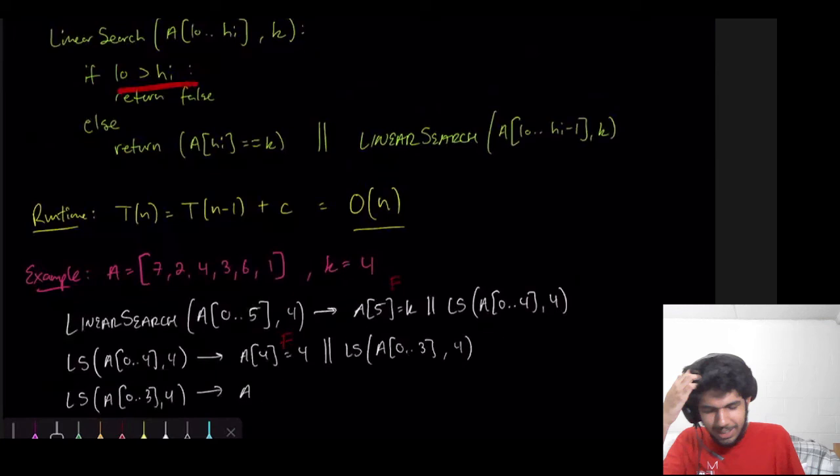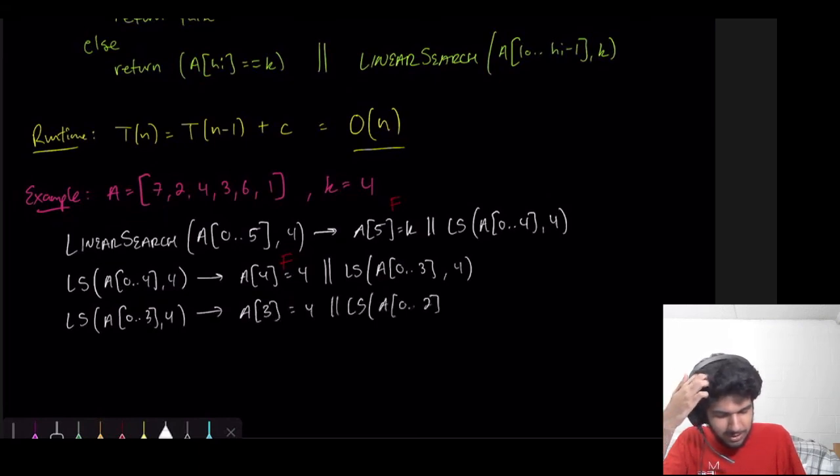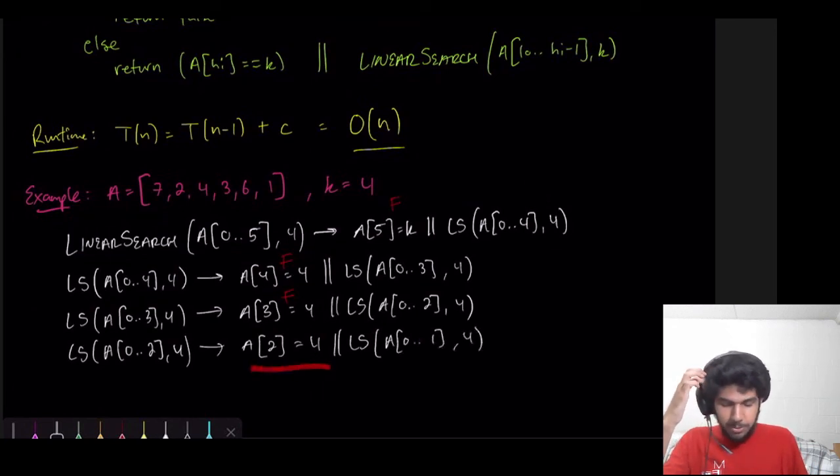So, we don't return false. So, we return the other thing here or linear search. A of 0 to 2, comma 4. We can check, is A of 3 equal to 4? This is A of 3. It's not equal to 4. So, that's a false. And then we do it again. A from 0 to 2, comma 4. Is low greater than high? No, it's not. So, we check, is A of 2 equal to 4 or linear search on the rest? So, is A of 2 equal to 4? Well, if we look here, it sure is. That is equal to 4. So, this will evaluate to true.